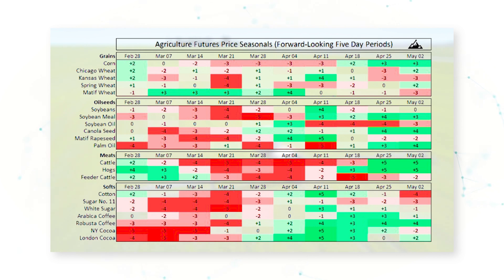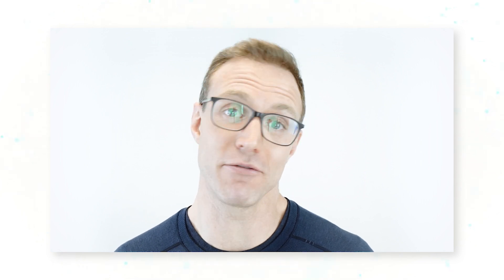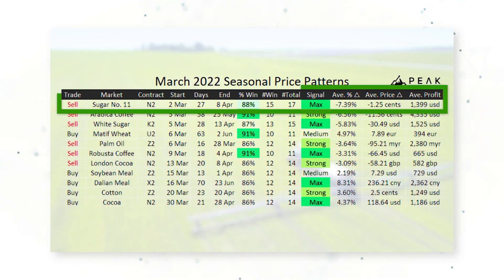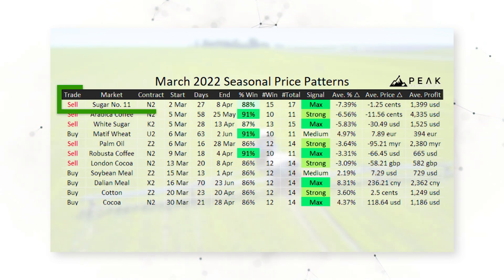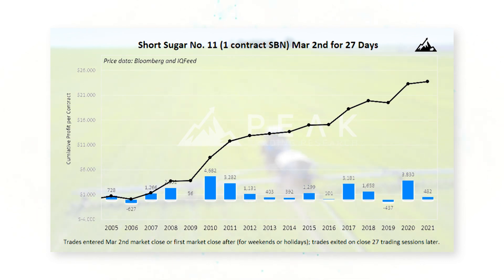We also provide our clients with heat maps to see the multi-week seasonal trends across the whole commodity complex. And finally, we provide very specific high hit rate seasonal patterns every month. For example, as one of our March 2022 seasonal price patterns, we can see that sugar number 11 futures have dropped in 15 out of 17 years for the 27 trading sessions starting March 2 — a consistently profitable bearish price trend in sugar over the past 17 years.